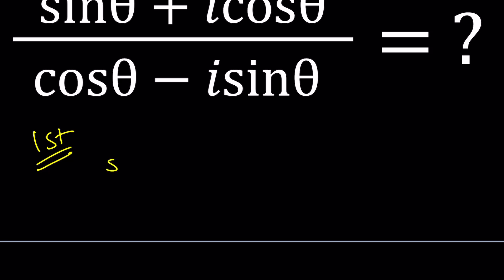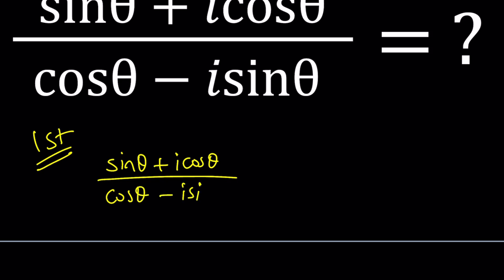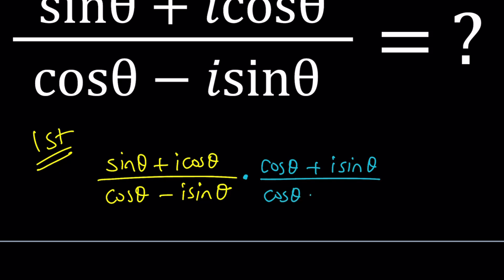For my first method I'm going to take this expression and do what is the most straightforward approach, which is multiplying by the conjugate. So I'm going to multiply this by cosine theta plus i sine theta divided by the same thing — that's the conjugate for the denominator.